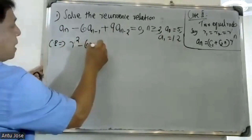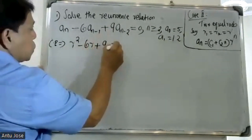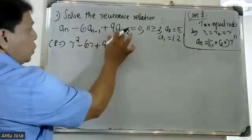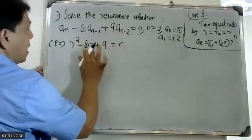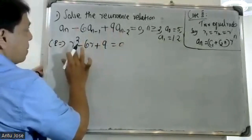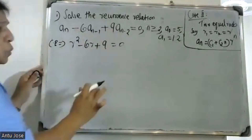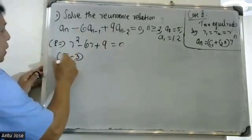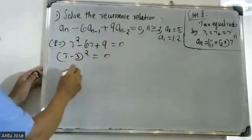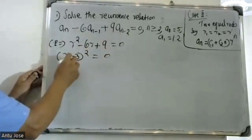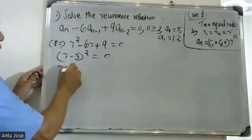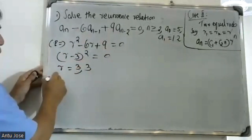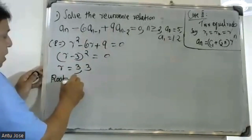To solve, form the characteristic equation: r² - 6r + 9 = 0. Factoring gives (r - 3)² = 0. The value r² - 6r + 9 equals (r - 3)², so the roots are equal. The roots are r = 3 (repeated root).